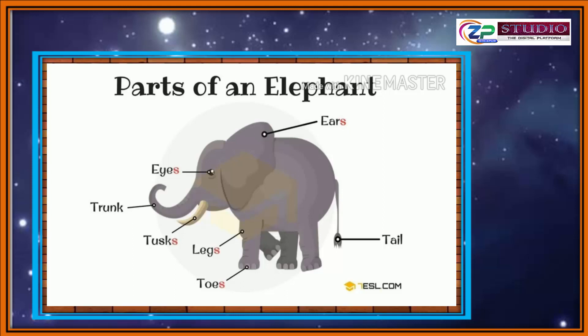Now we will see another organism. This is an elephant. We can see its ears, eyes, trunk, tusks, legs, toes, and tail. We can see this figure also in the chapter, but we have taken it in detail here.